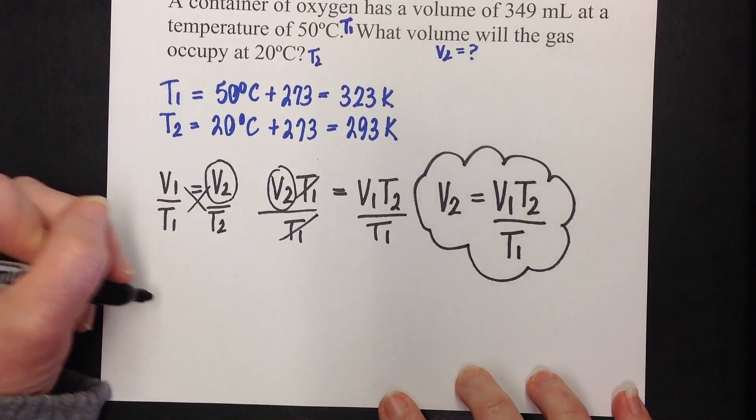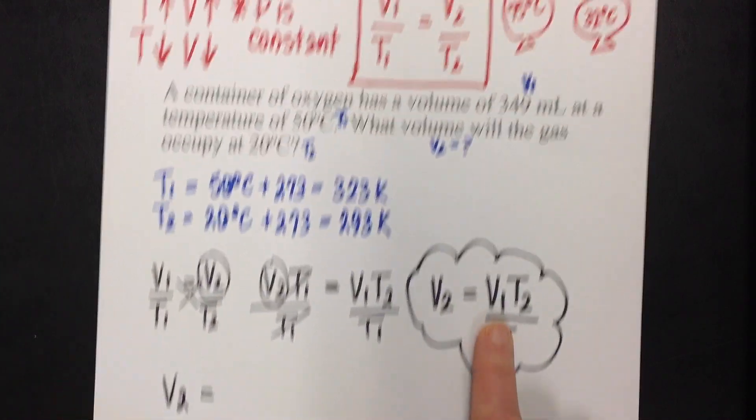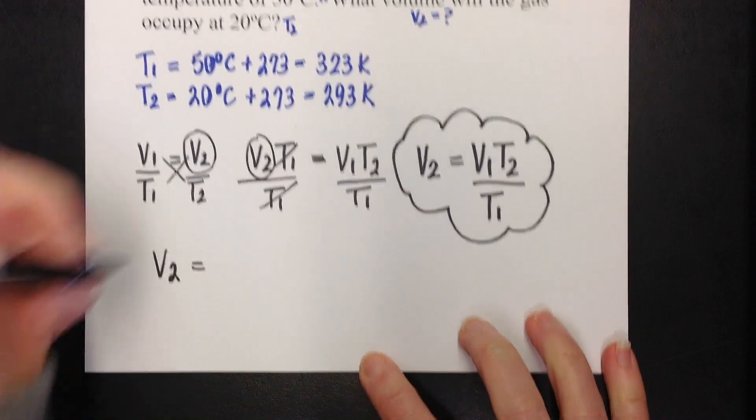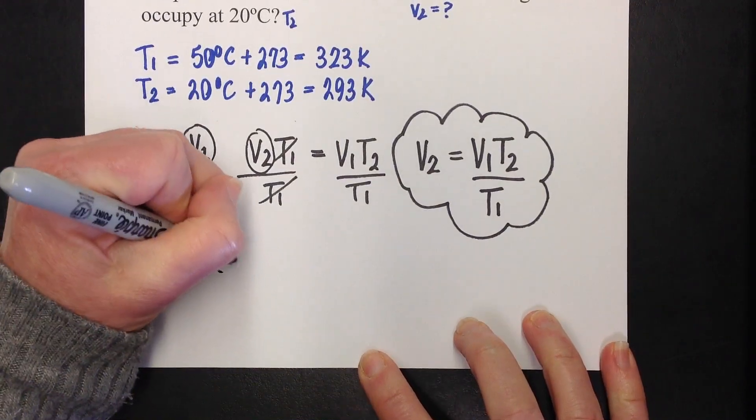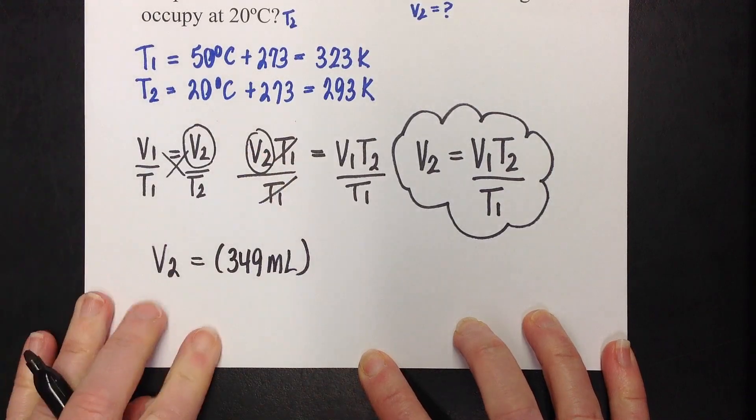All of that said, let's just plug in and get this answer. So, V2 equals V1, which was 349 milliliters times T2.